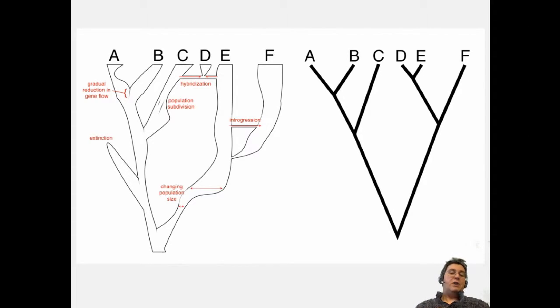Now, we are working on methods to deal with more reticulation, more of this net-like structure of populations rather than a full tree structure. That said, most of the field still relies on this tree metaphor, and methods only accept trees. We'll be stuck with trees for 20 years more.